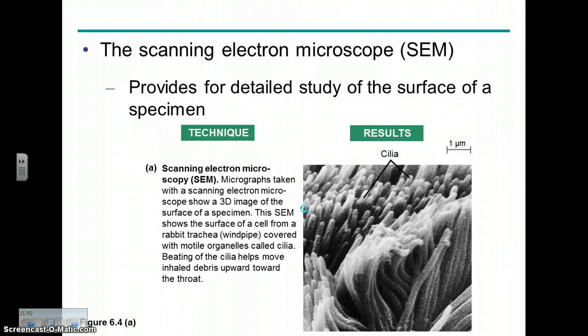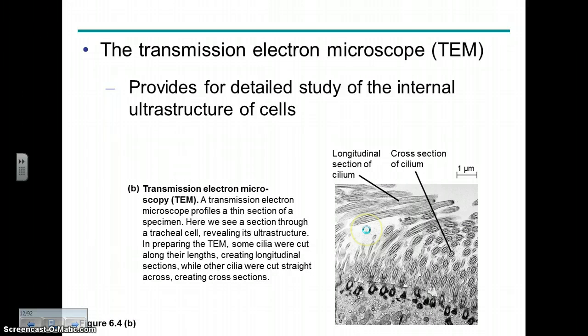There are two types of electron microscopes. Scanning, which gives you a three-dimensional look at the outside of something. And transmission, which gives you a look at the inside — a view of a slice or cross-section of something.